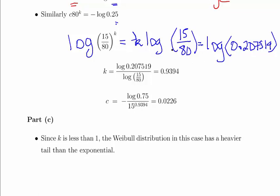So we have an expression there. K equals log of 0.207519 divided by log of 15 over 80. Bit of calculator work. And what we end up with there is 0.9394. Which is great.